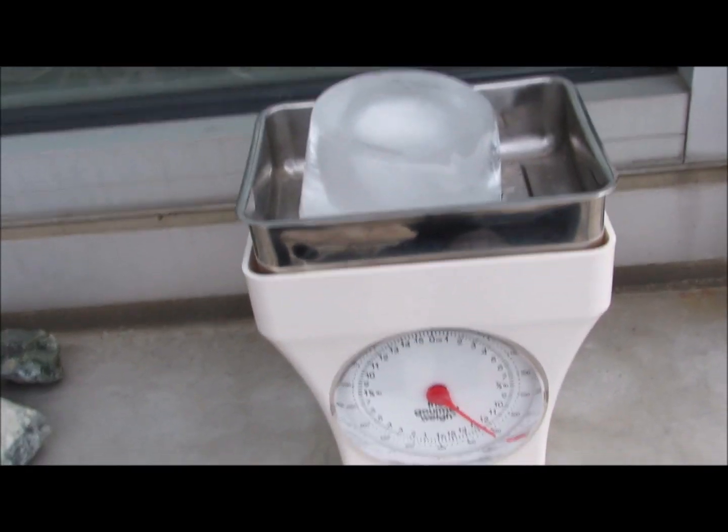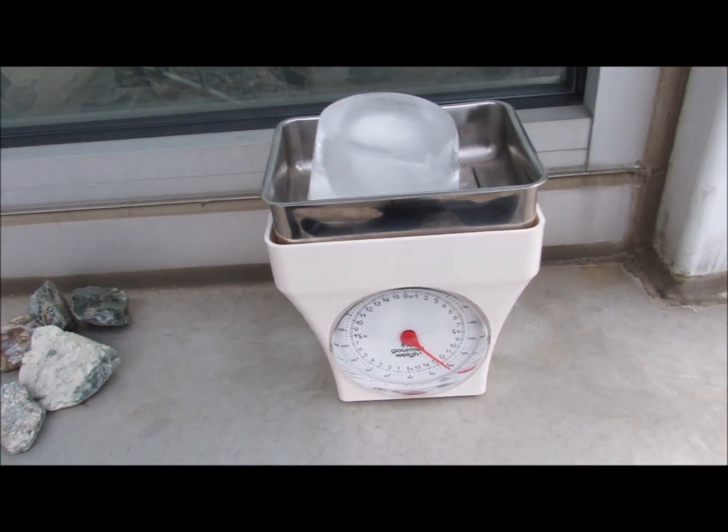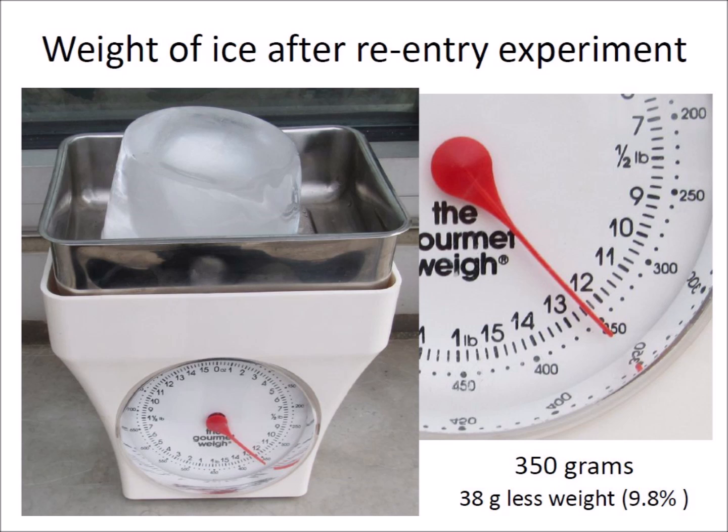This is the ice piece that remained. The ice lost only 38 grams after being heated with a propane torch for one minute — a loss of less than 10% of the initial weight. This means that it is plausible that ice boulders ejected from the Laurentide Ice Sheet by an extraterrestrial impact could have survived reentry through the atmosphere to produce the Carolina Bays and kill the North American megafauna in the process.